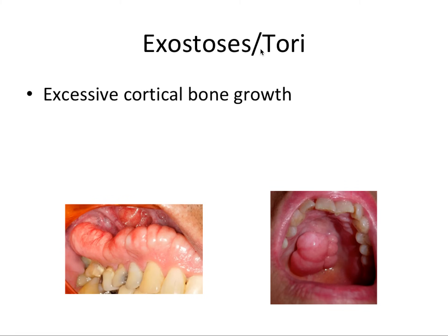Next we have exostoses and tori — excessive cortical bone growth. They're basically named based on where they occur. A buccal exostosis is on the cheek side, and a palatal torus is on the palate. The examples shown are fairly severe; they're usually not quite this large.